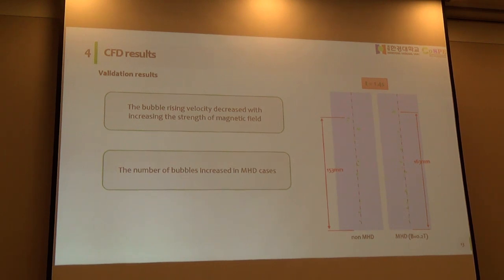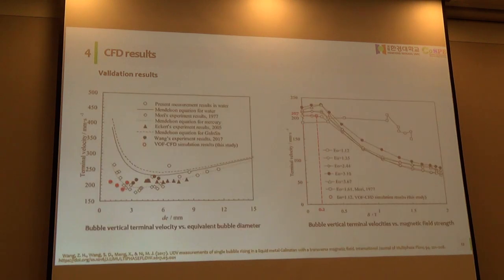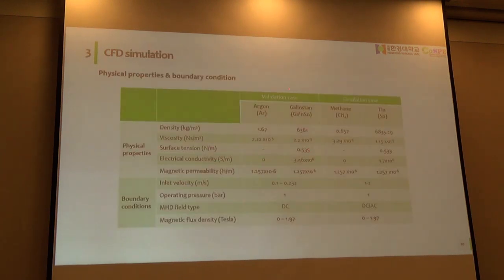This is the first step to get the effect. The result I showed in this presentation is the effect of magnetohydrodynamics in the bubble, not including the reaction. After that, when I have the validation, I will change the bubble. This bubble is just argon and gallium, the same gas and liquid with the validation case. After that, in the future, I will change it to methane and tin to get the result of my research. But right now, I just show the result of this stage.